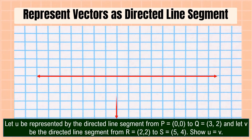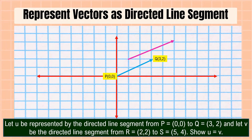Let u be represented by the directed line segment from point P at (0, 0) to point Q at (3, 2), and let v be the directed line segment from point R at (2, 2) to point S at (5, 4). Show that u is equal to v. To find the answer, we're going to get the magnitude and direction of both directed line segments.